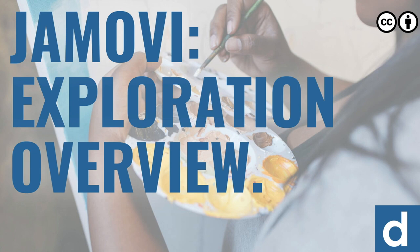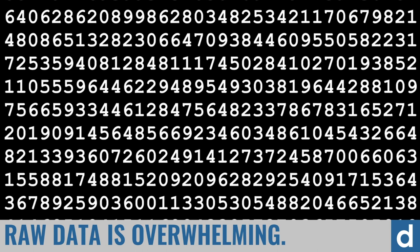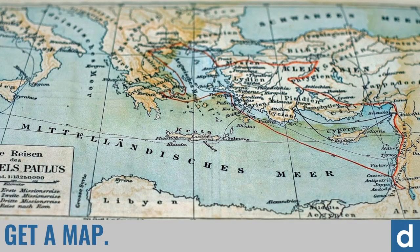Our next topic in Jamovi is exploring data. The reason we need to do that is because raw data is just completely overwhelming, even when it's set up in nice rows. Instead, you need to get a map — you need to know what you're dealing with and get the lay of the land, so you can tell a coherent story.